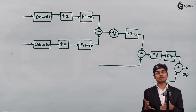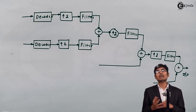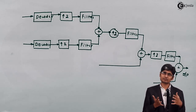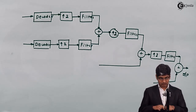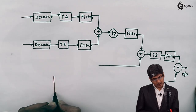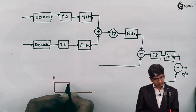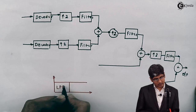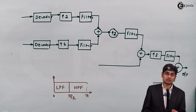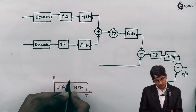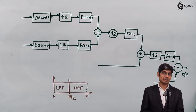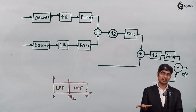Before decimation we used filters to avoid aliasing; here after interpolation we use filters to avoid imaging in the decoder. When designing filters for the decoder, the low-pass filter should go from 0 to π/2 and the high-pass filter from π/2 to π. A very firm border between them is required — but is it possible to design such a filter? No, it is not. To design such a filter would require the slope of the transition to be infinite, and the pole count would be very high.